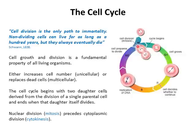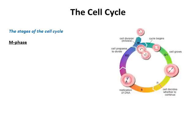Mitosis is the division of the nuclear material — the replicated DNA genome. Cytokinesis, which follows mitosis, is the division of the cytoplasm. It's cytokinesis that snips and separates a dividing cell into two cells to complete and end the cell cycle.